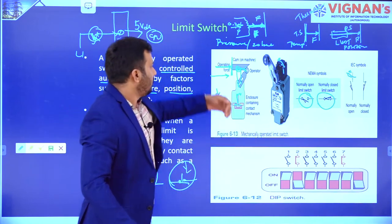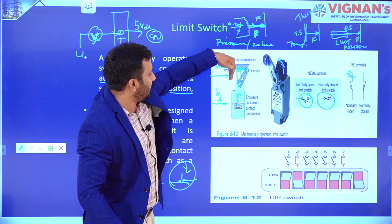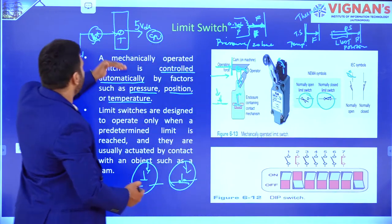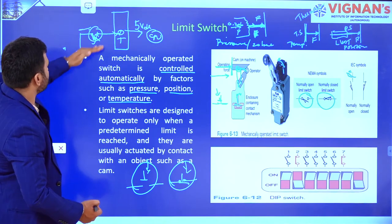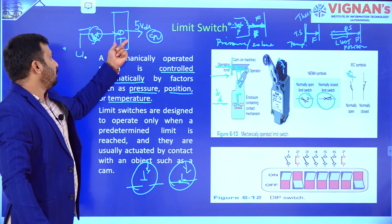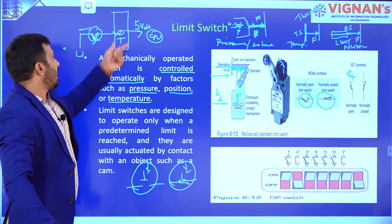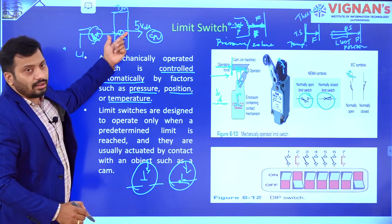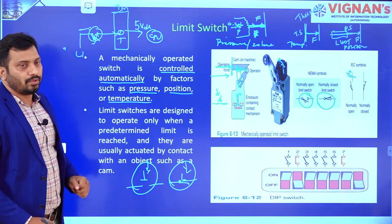For example, if it is normally open type, whenever this crosses the limit, what will happen? This is going to be a closed contact. Previously we discussed — whenever the limit switch is closed, what will happen? Line voltage acts as input to the terminal. Whenever the input signal comes as input to the IO module, this IO module will perform internal signal conditioning, and 5 volts DC is going to be given as output.